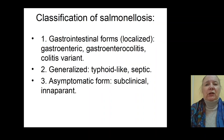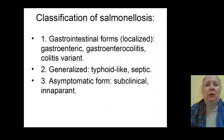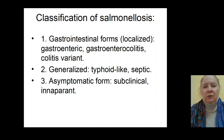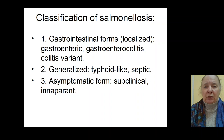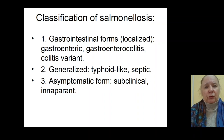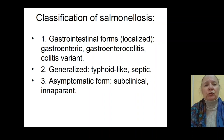Let's speak about the gastrointestinal forms. The syndrome of gastroenteritis is the most common syndrome in the clinic of Salmonellosis. There are mild, moderate, and severe forms of the gastroenteric variant. In mild forms, the temperature is no more than 38 degrees, and the syndrome of gastroenteritis occurs no more than five times per day. There is no dehydration and no intoxication in mild forms.